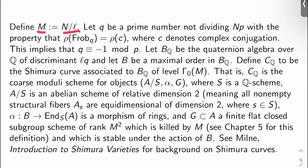Okay, so that's just some terminology to get out of the way. Let M be N/ℓ, let q be a prime not dividing Np with the property that ρ(Frob_q) = ρ(c), where c is complex conjugation. This is possible by Chebotarev density, basically. This condition is well known to imply q ≡ -1 mod p.